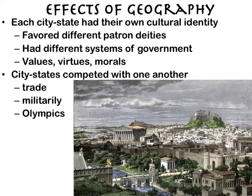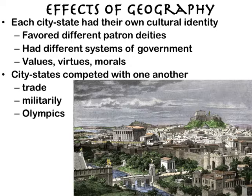They also competed against one another a lot — each competing for the same customers in trade around the Mediterranean world, often trying to outsell each other. Think of McDonald's and Burger King competing: they're selling pretty much the same thing but trying to convince you theirs is better. Athens, Sparta, Thebes, Corinth — all selling pretty much the same thing but competing against one another. When you're competing for trade, you're also often competing militarily, so it's no shock there were many wars between the Greek city-states.